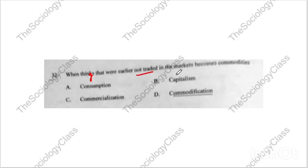Question number thirty-two — also repeated: 'When things that were earlier not traded in the market become commodities, what is this process called?' Options: consumption, capitalism, commercialization, or commodification. The correct answer is D — commodification. It means the process of something becoming a commodity that was not a commodity before.